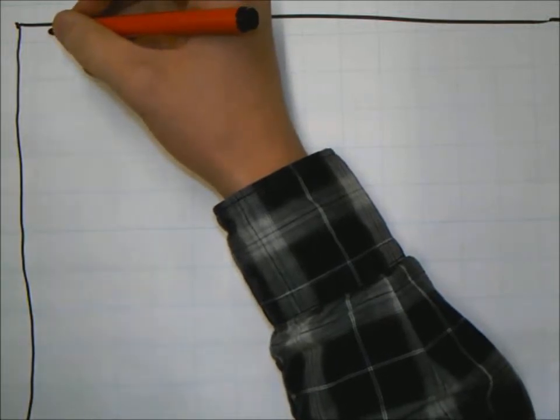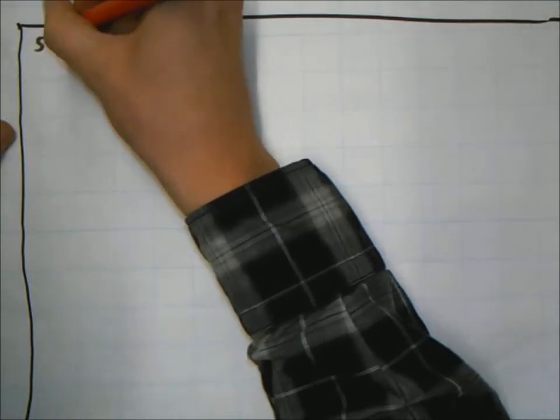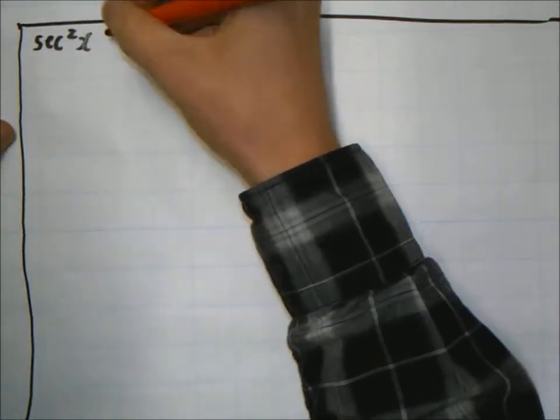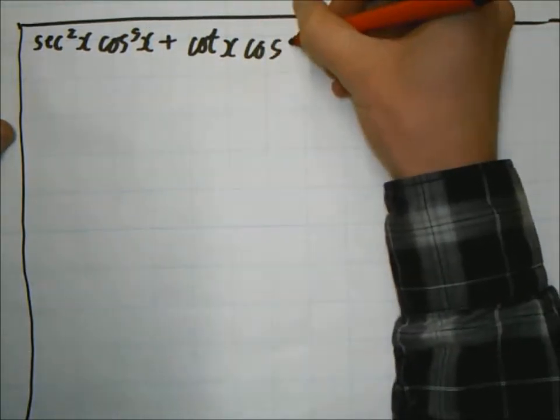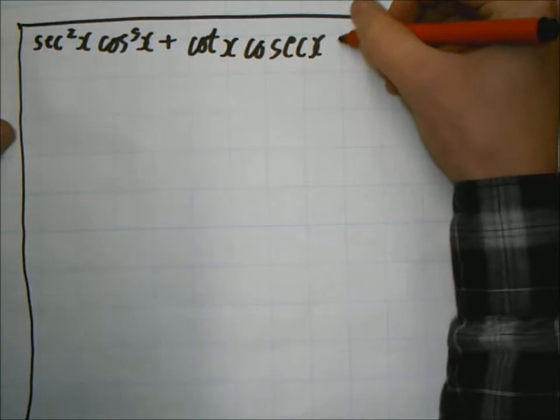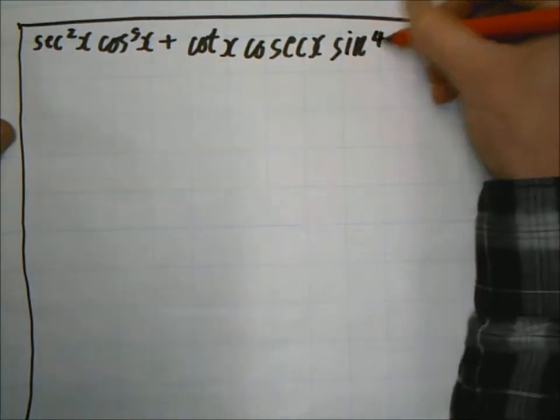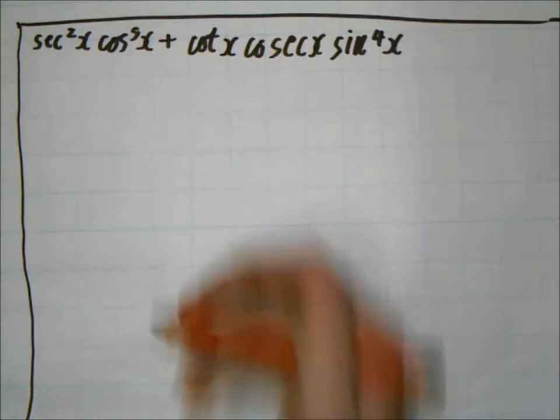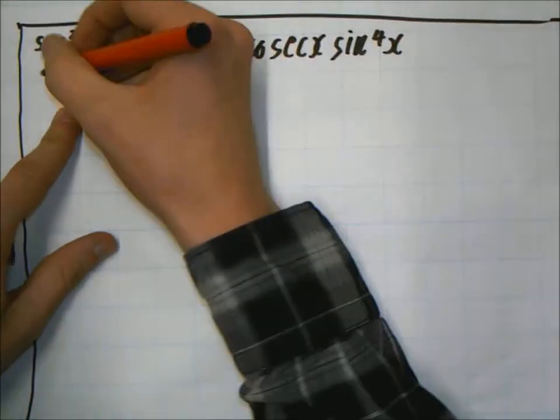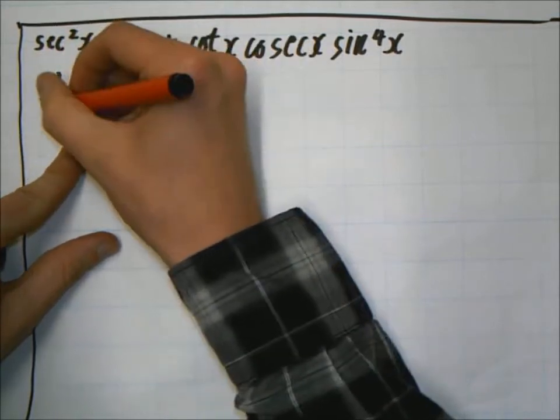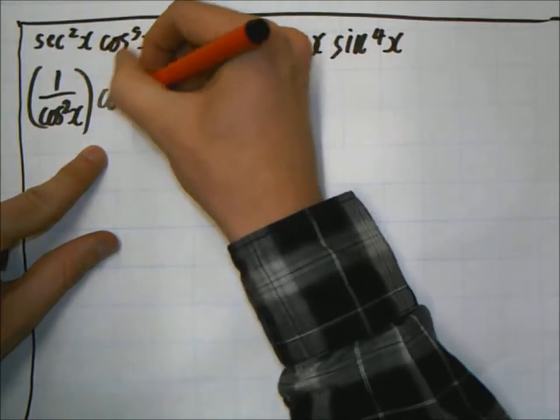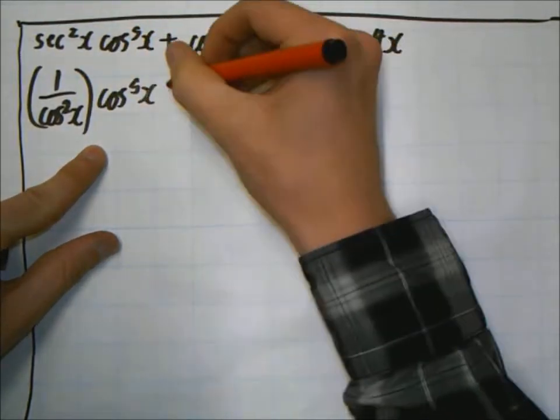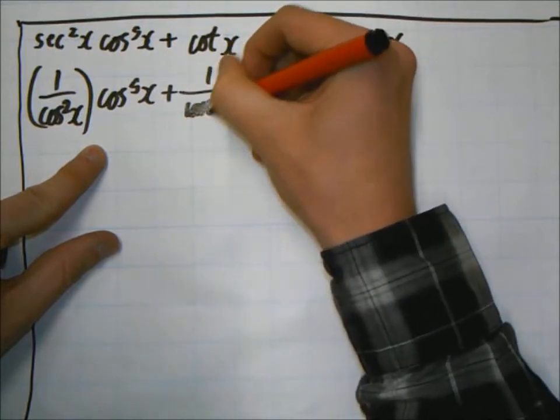Guys, he's ready to go. Okay, so the question is sec squared x cos 5x plus cos x cosec 4x. Okay, everyone can follow so far? Right, and then you can change that so it's one over cos squared x.